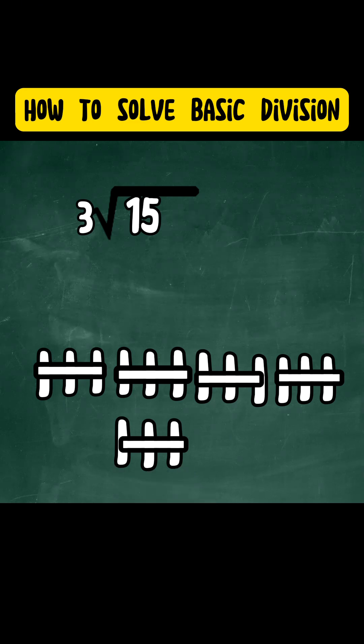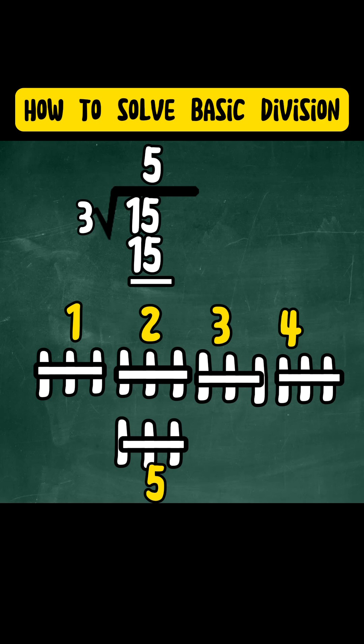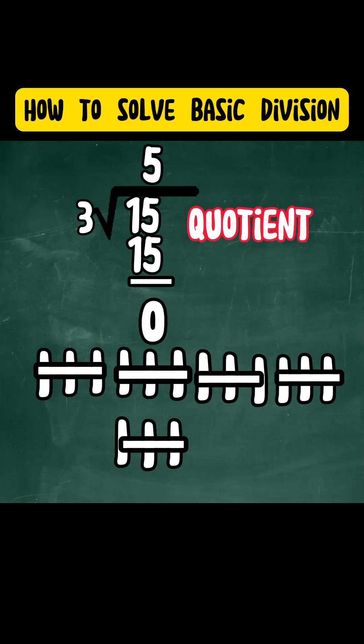So we count how many groups have been crossed out. 1, 2, 3, 4, and 5. So 15 divided by 3 is equal to 5. 5 times 3 equals 15. 15 minus 15 is equal to 0. So the quotient is 5.